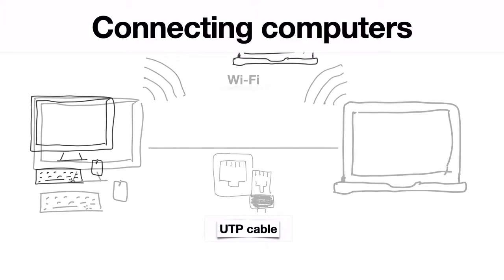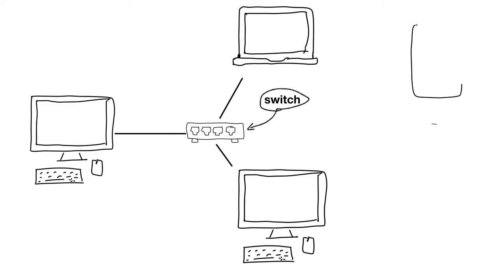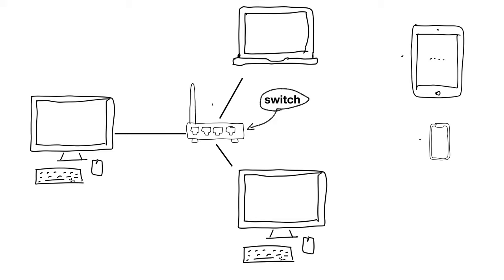Linking multiple computers together is called a network. To create said network, we will need a device that links all these computers together — some sort of digital crossroads, so to speak. That device is what we call a switch. You can mostly recognize it by a great many UTP connections. Because we also want to connect our tablets and smartphones to our network, which do not have a built-in UTP connection, most switches can also connect to Wi-Fi.